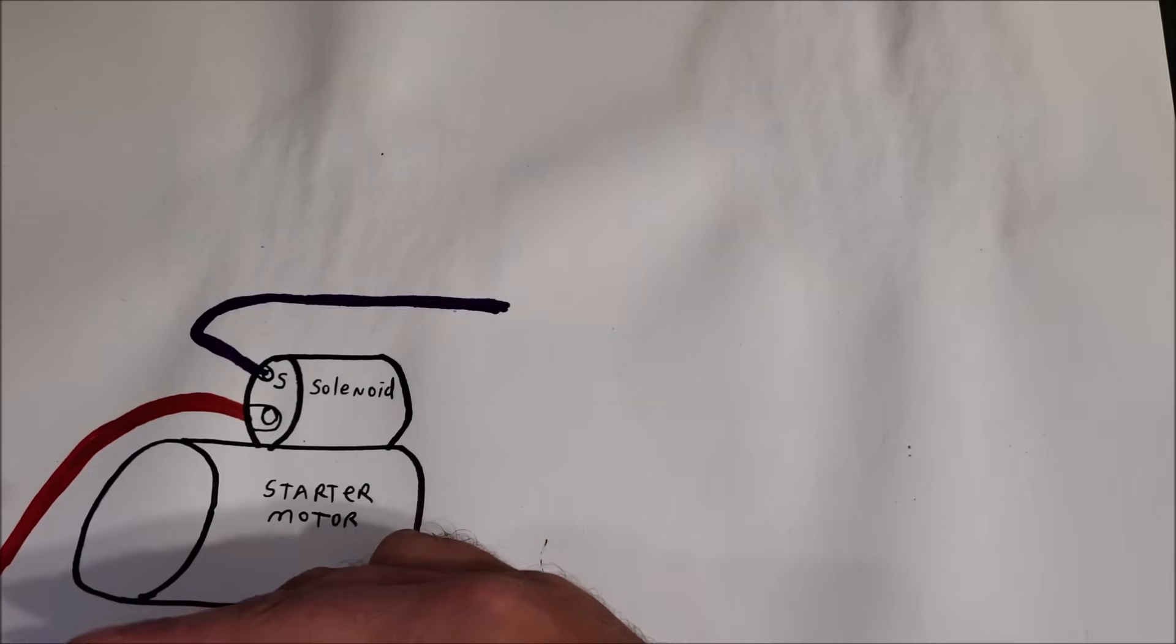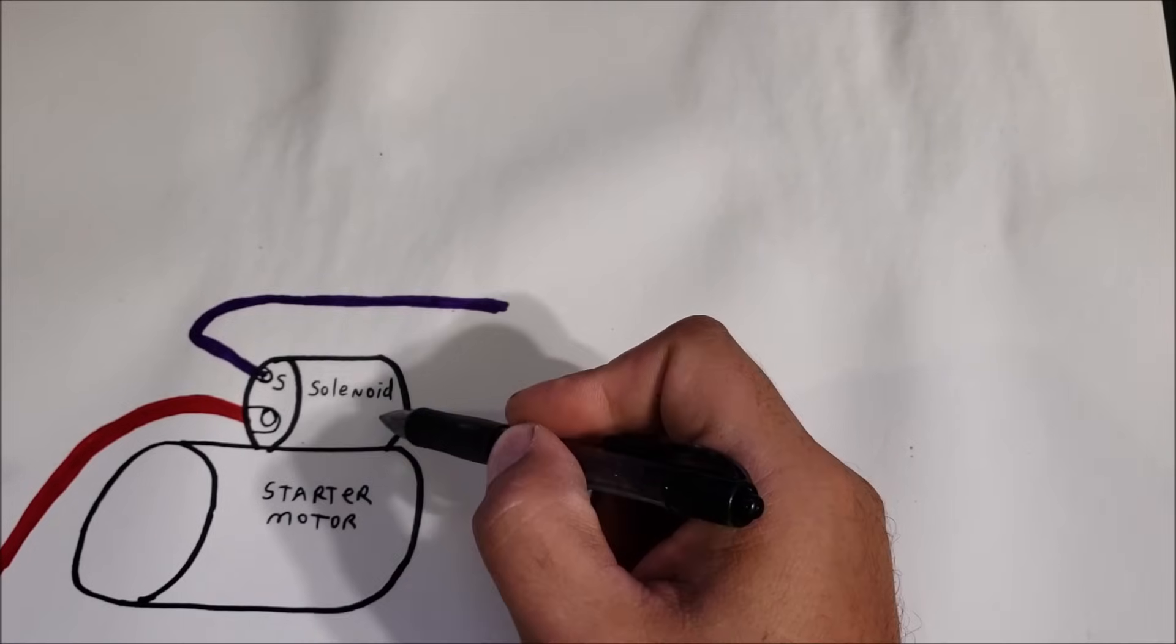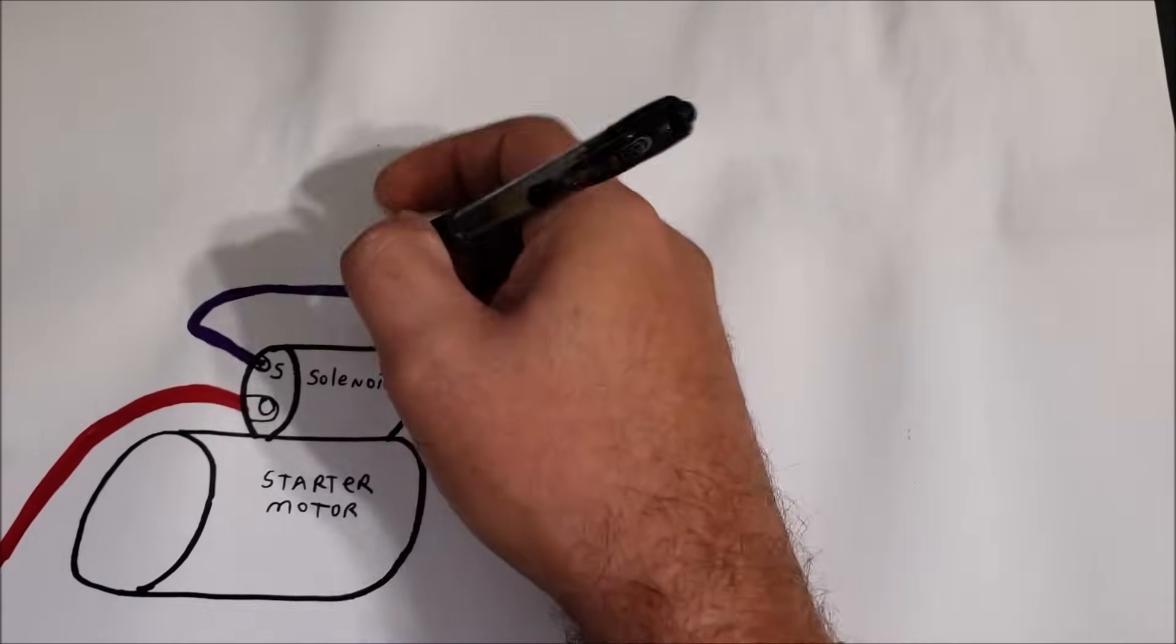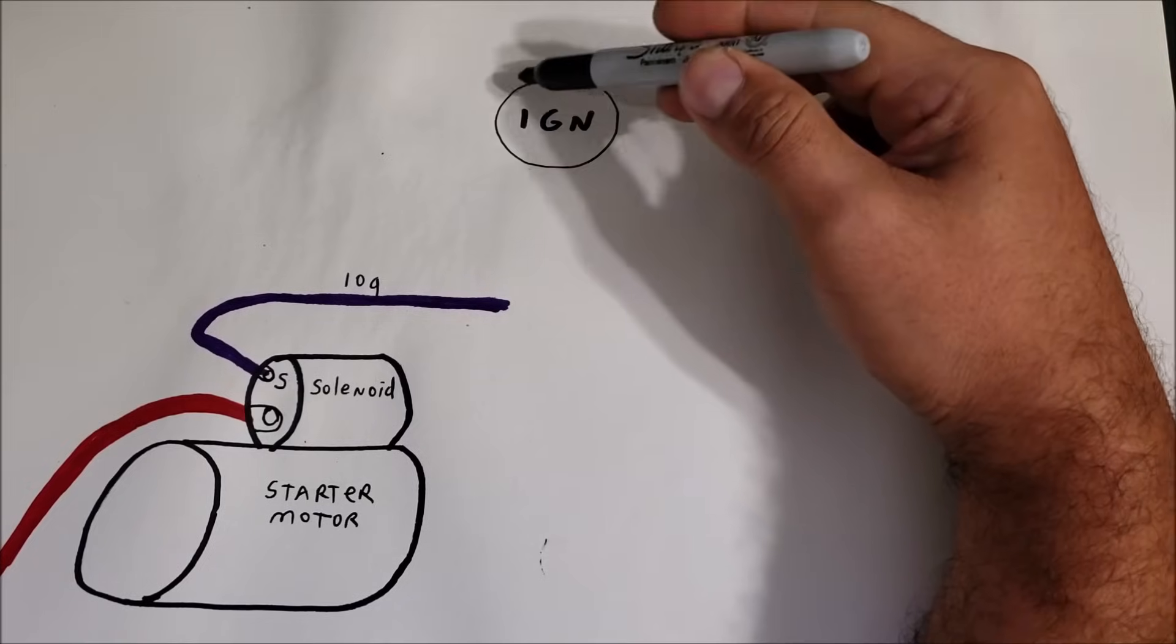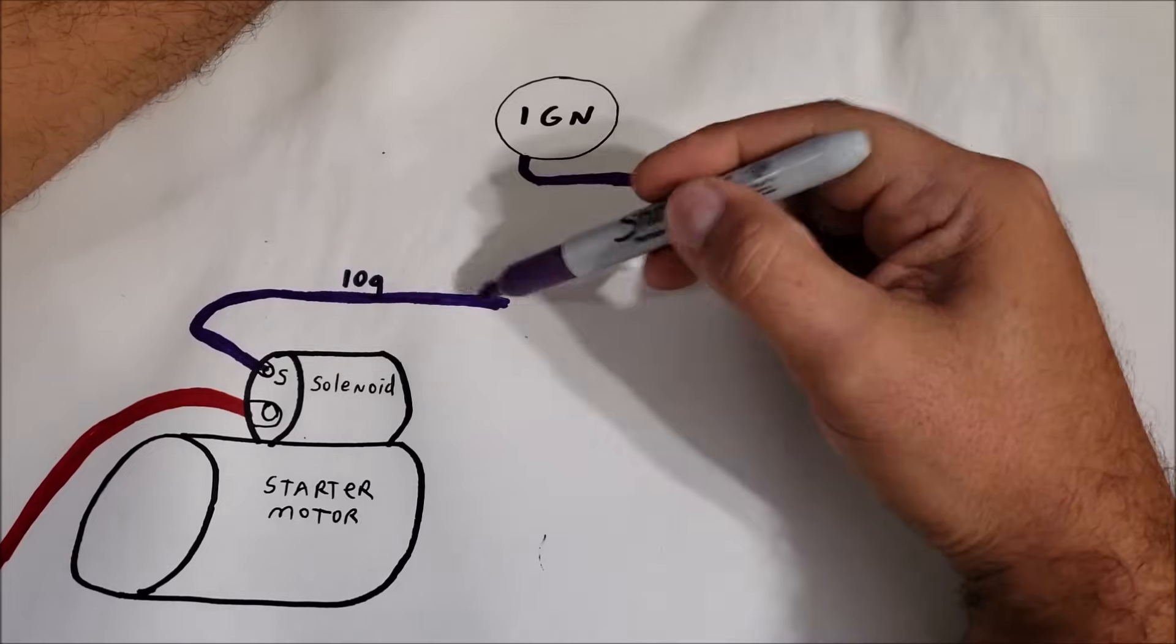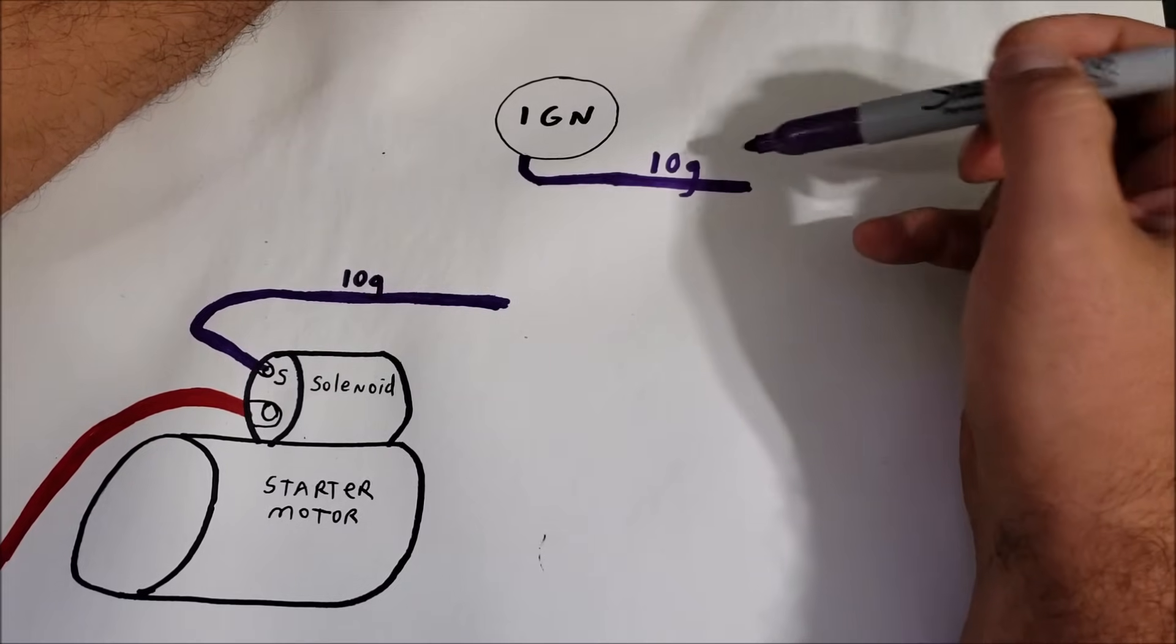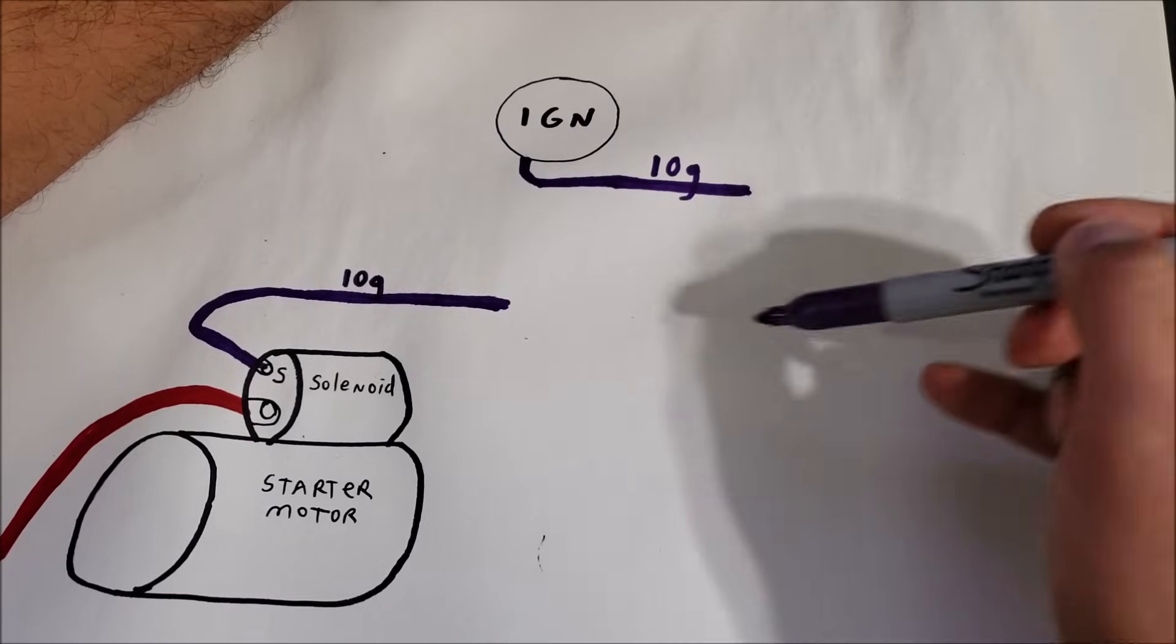On my GM cars it's a 10 gauge purple wire. So no matter what kind of car you're working on, it's going to have an ignition switch somewhere. These wires can be different colors, usually 10 or 12 gauge, but we're looking for the wire coming off the ignition switch that's going to give power to our starter solenoid.